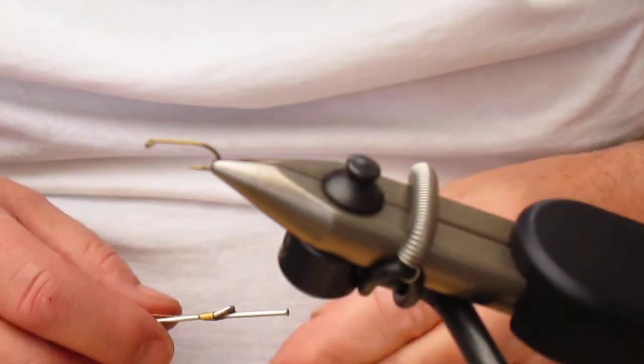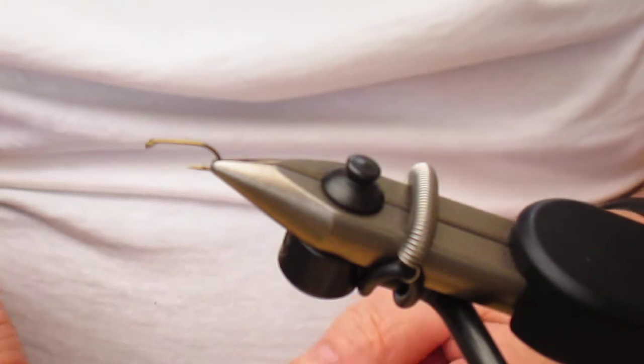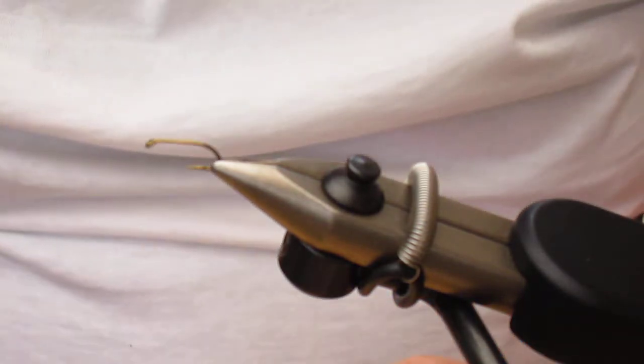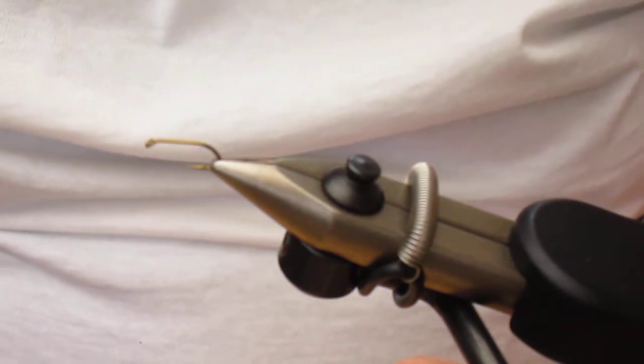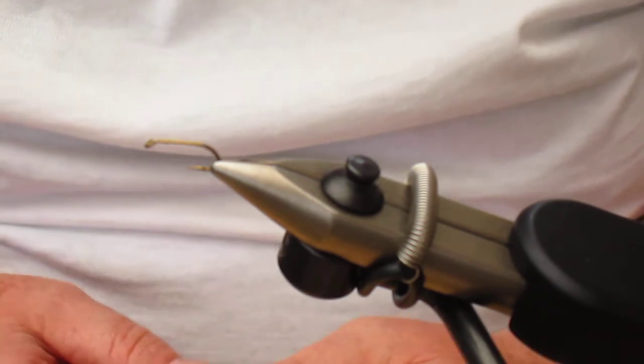Good afternoon ladies and gentlemen, and welcome to Fly Dressing Made Easy. My name is Trevor Jones and this afternoon we're going to tie a fly called the Cellar Field Blue, a fly from my competition days, so it's quite possible many of you will not know the pattern.